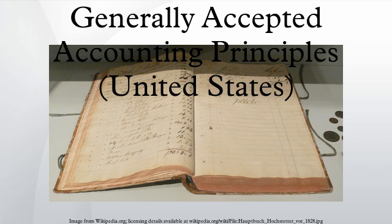The AICPA first created the Committee on Accounting Procedure in 1939, and replaced that with the Accounting Principles Board in 1959. In 1973, the Accounting Principles Board was replaced by the Financial Accounting Standards Board under the supervision of the Financial Accounting Foundation, with the Financial Accounting Standards Advisory Council serving to advise and provide input on the accounting standards.